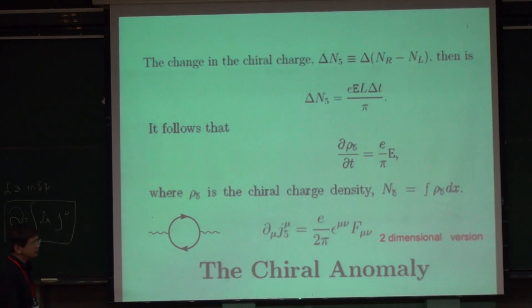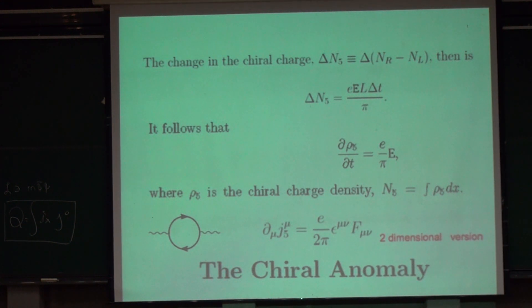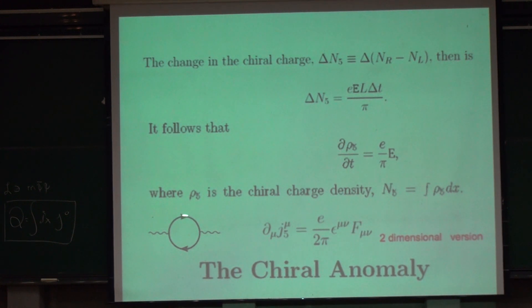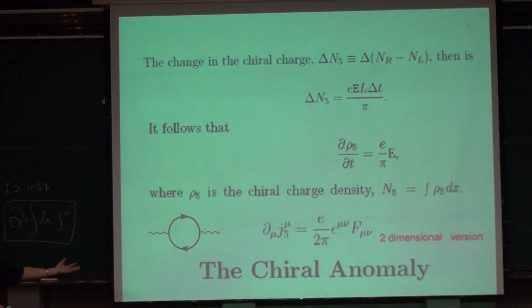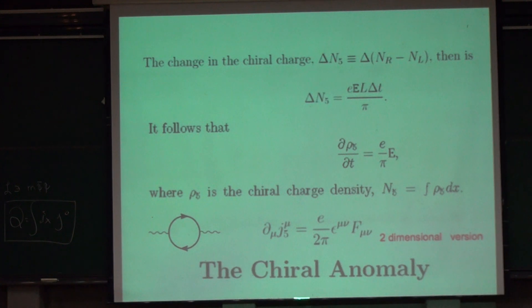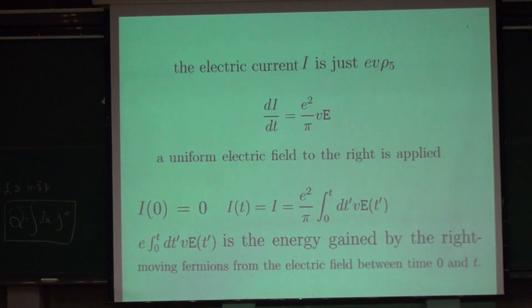Rho_5 is the chiral charge density, N5 divided by L. If I covariantize this formula, it becomes the two-dimensional version of the chiral anomaly. Even though this theory is chirally invariant — just as in the 3+1 dimensional case — the chiral current is not conserved. So d_mu J5^mu equals e over 2pi times F_mu_nu F^mu_nu. In 2D, this arises from the bubble diagram rather than the triangular diagram of 3+1 dimensions.